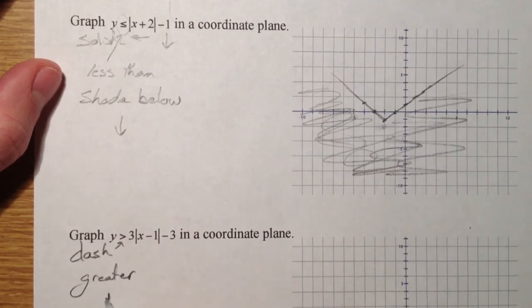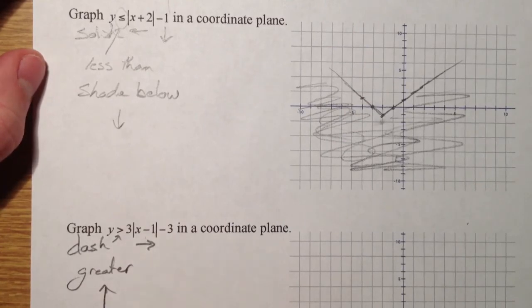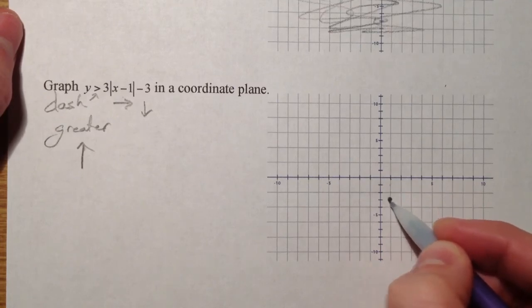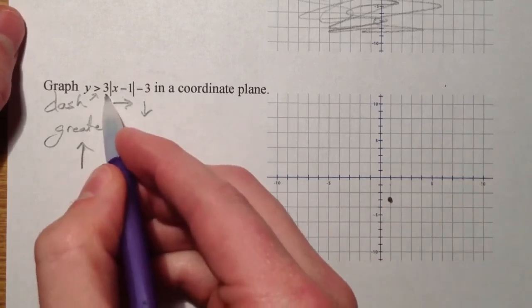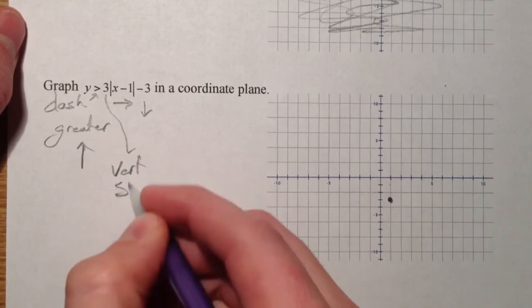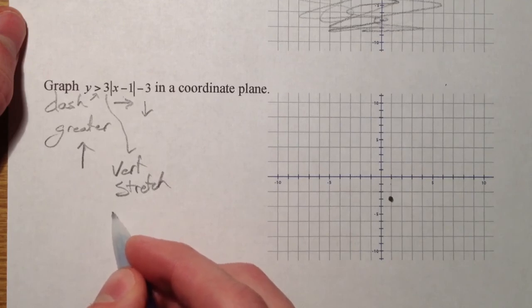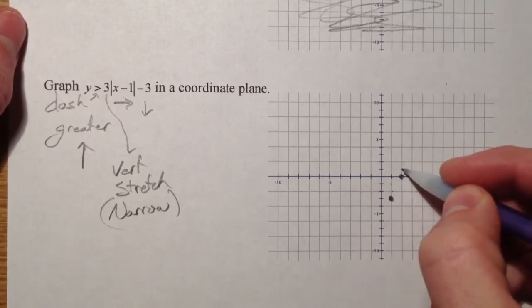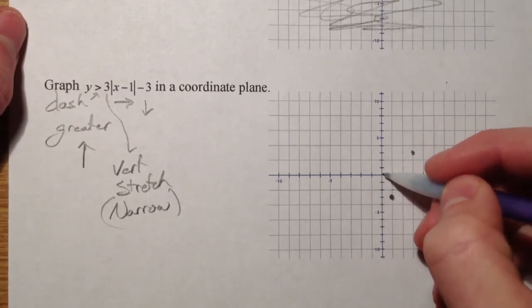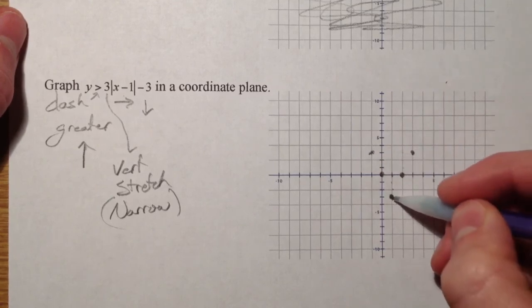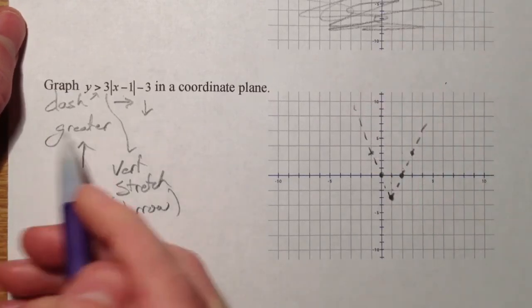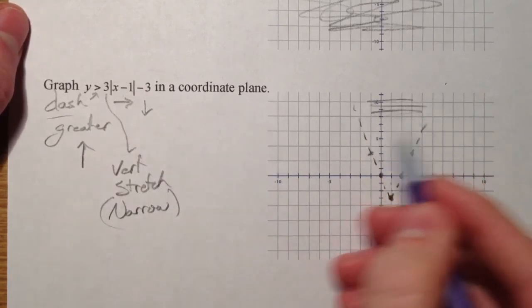Greater is above. So we're going to shade above. Minus 1, opposite of what we think, and minus 3, down 3. And so right 1, down 1, 2, 3. And this 3 right here is a vertical stretch. It's going to make it narrower. And it's going to change the slope. And so it's going to go up 1, 2, 3, and over 1 rather than just up 1 and over 1. So that's the slope. And so now I'm going to try to, it's always the toughest to remember to actually dash it after you say it's going to be dashed. And so that's why I like to write it so you don't forget. And it's greater than so it's going to be on the inside.